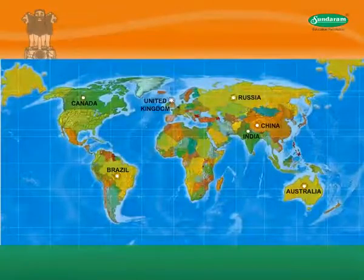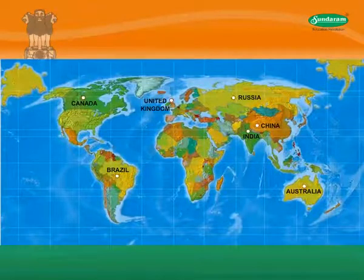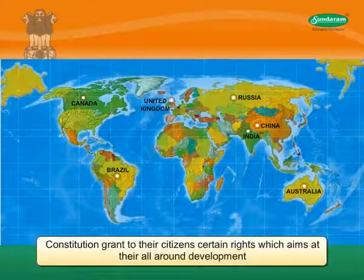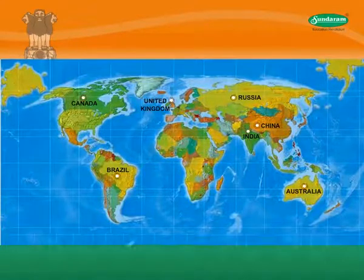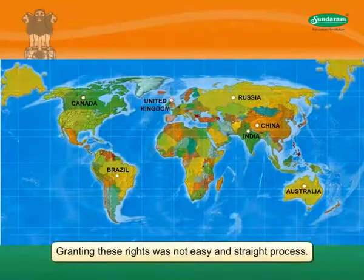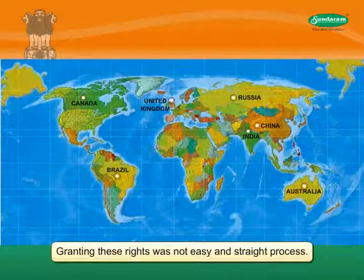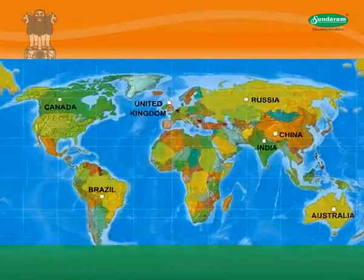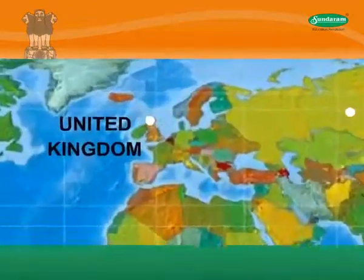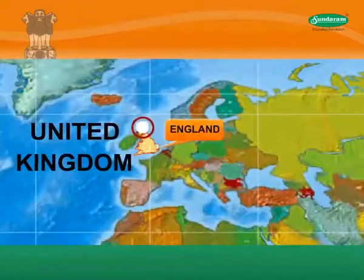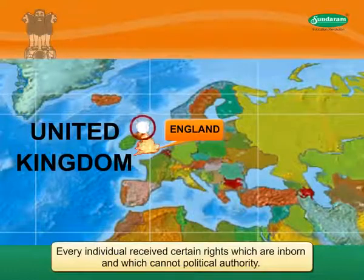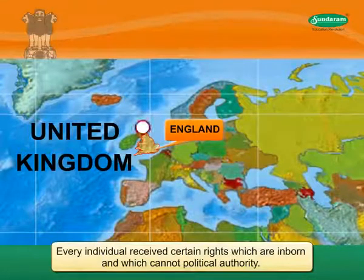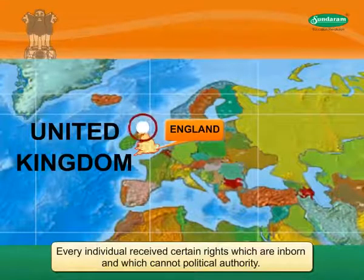Today, every country, through its constitution, grants to their citizens certain rights which aim at their all-round development. But granting these rights was not an easy and straightforward process. The concept was put forward in England that every individual received certain rights which are inborn and which cannot be taken away by political authority.